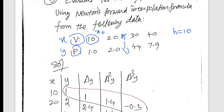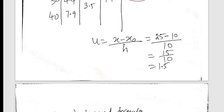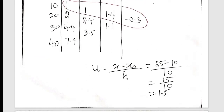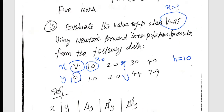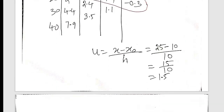The difference is the same, which gives the interval h value, and it's a forward formula. So in the x-y table, del y, del square, del cube — past value solved. Forward: u equals (x minus x-not) by h. So x is 25, x-not is 10, h is 10. Apply and divide: u equals 1.5.